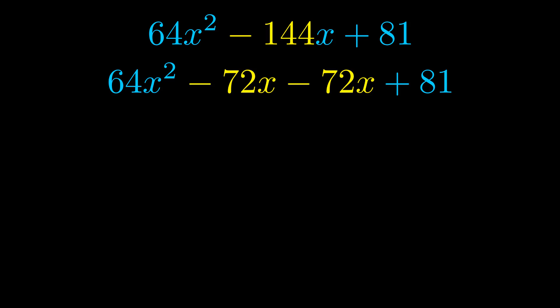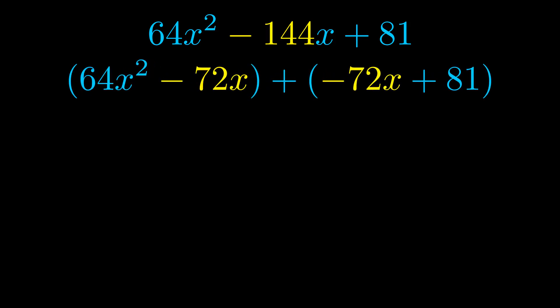Once we've done this we go ahead and put parentheses around the first term and the last term. And we do that so that we can take the greatest common factor out of both terms. We can see the greatest common factor is now outside in green. Notice also how what remains inside of the parentheses is the same in both cases.